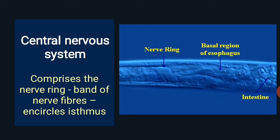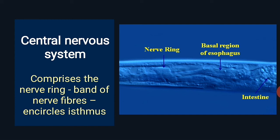Now the important part: the central nervous system. The CNS comprises the nerve ring, which is a band of nerve fibers that encircles the esophagus. It is the brain of the nematode, consisting of the nerve ring along with ganglia. Also known as the circum-esophageal commissure, it acts as a belt. In Tylenchida it surrounds the esophagus, and in Dorylaimida it is around the narrow anterior part of the esophagus.